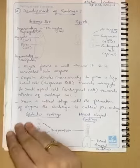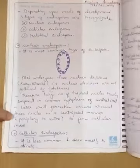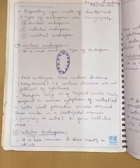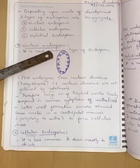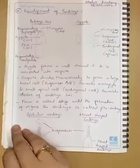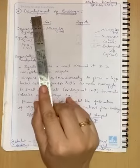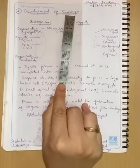So last lecture we studied post-fertilization changes, where we studied the structure forming after fertilization in detail. We studied one structure that is endosperm and what are the types of endosperm. Now the next topic in post-fertilization changes is development of embryo.